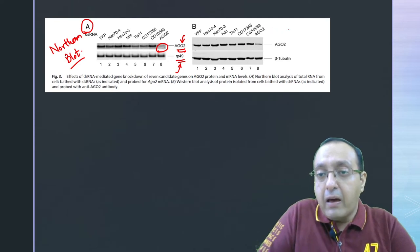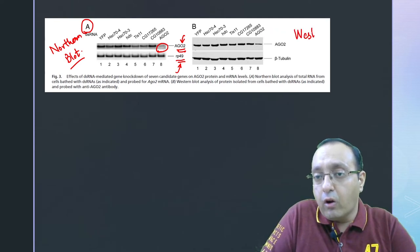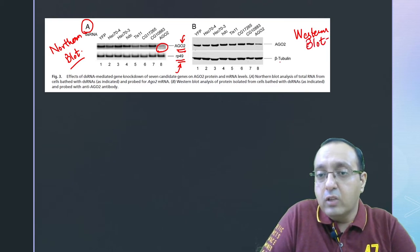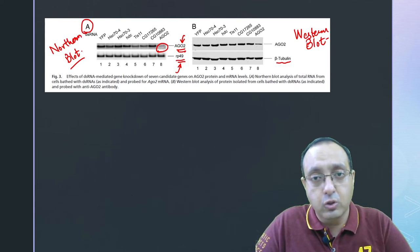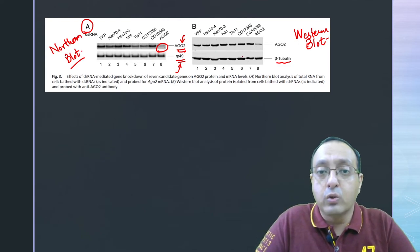In panel B, we have the Western blot which looks at the protein levels. Now they are probing it with beta tubulin, another housekeeping gene, so its levels should also remain the same. It is a loading control.